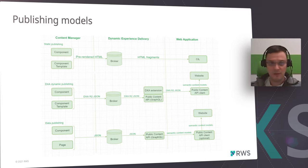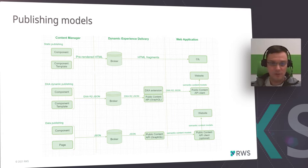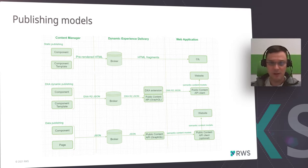The answer is shown at the bottom of the diagram. With the new data publishing, we generate a standard data model on the Content Manager side and publish it to the broker database. You don't need to do any templating for this anymore — it can be controlled by your editors or content designers on the schema level. On the Dynamic Experience Delivery side, you can configure your semantic content models and expose them through the GraphQL endpoint to the application, where the client is an optional component.